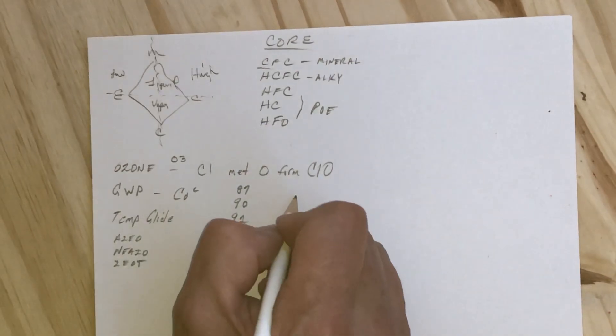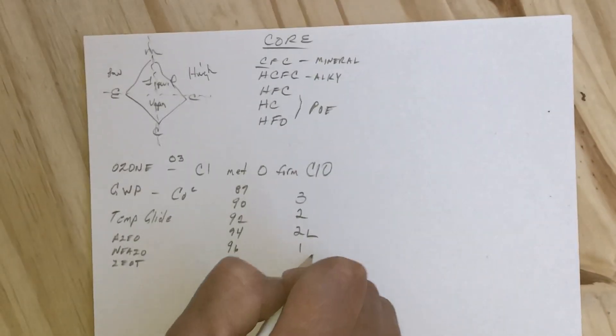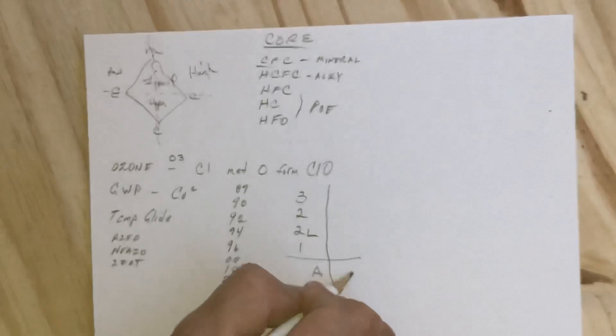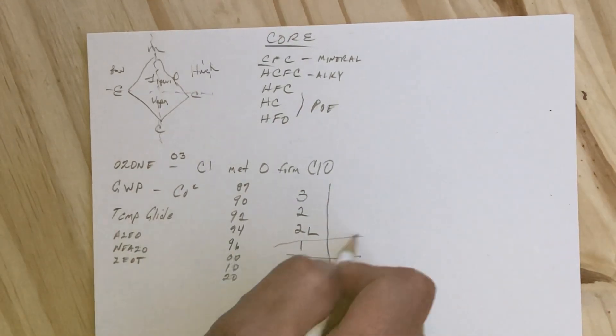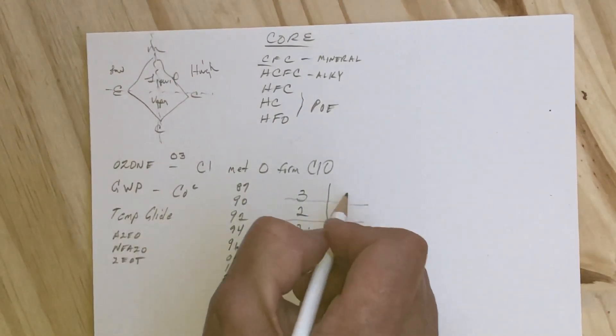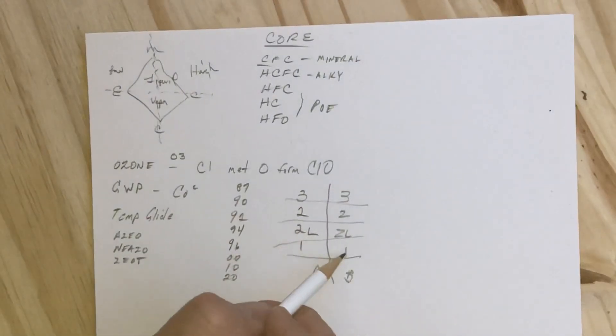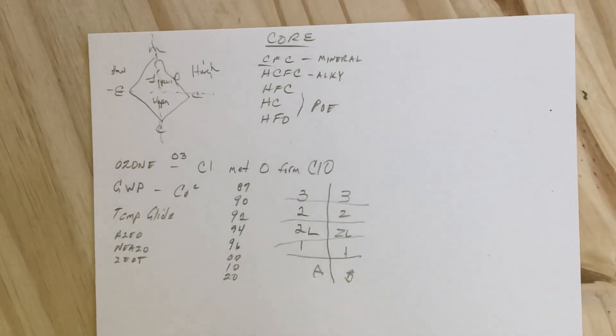Speaking of refrigerants, there are three classes: 3, 2L, and 1. These can be rated as an A or B refrigerant, where A means it has no toxicity or low toxicity, and B is high toxicity. These all break down into the refrigerant's flammability rating.